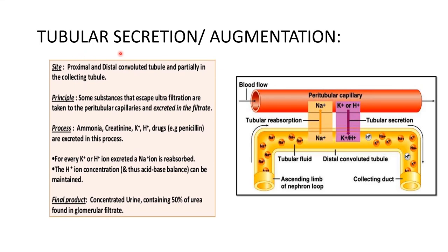The third step is tubular secretion. The site is the distal convoluted tubule and partially the collecting tubules. Substances that escape ultra-filtration are taken to the peritubular capillaries and excreted into the filtrate. Ammonia, creatinine, potassium ions (K+), hydrogen ions (H+), and drugs are excreted in this process. For every K+ or H+ ion excreted from the blood, one sodium ion is reabsorbed from the distal convoluted tubules into the peritubular capillaries. H+ ion concentration thus helps maintain acid-base balance. The final concentrated urine contains about 50% of urea from the glomerular filtrate.